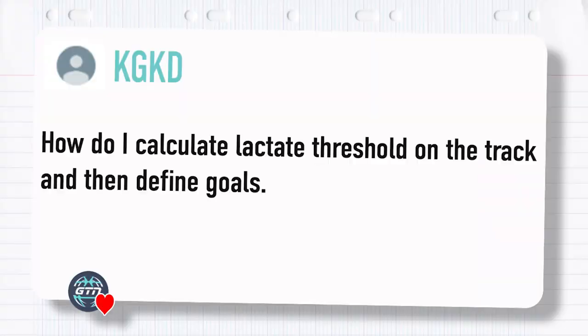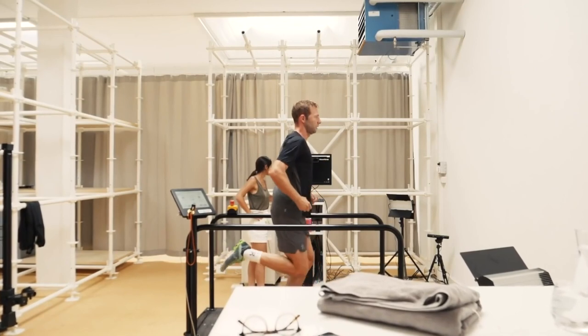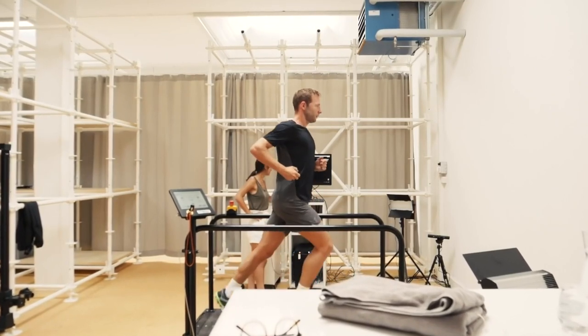Starting with this one from KGKD: how to calculate lactate threshold on the track and then define goals? I assume by track they mean running. Now, with lactate threshold, the most accurate way of calculating this is to head into a sports science lab. You're going to get very good results from that, but it's not as easily accessible for everyone.